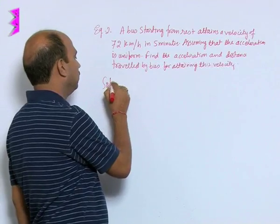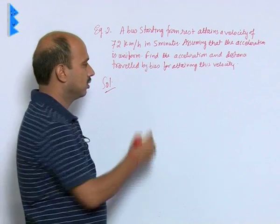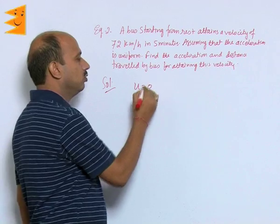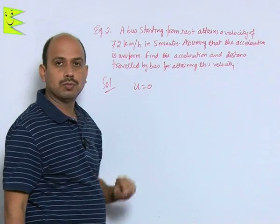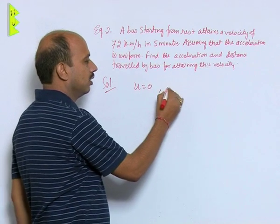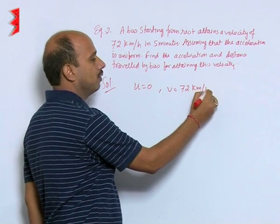So, now see in this question, bus is starting from rest means u equals 0. Attains a velocity of 72 kilometers, this is final velocity. V equals we can write 72 kilometers per hour.